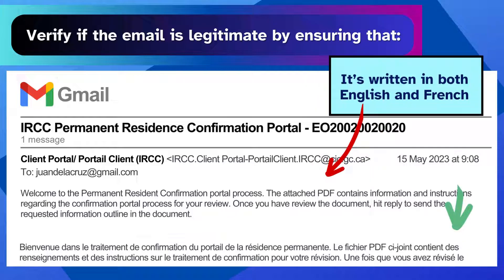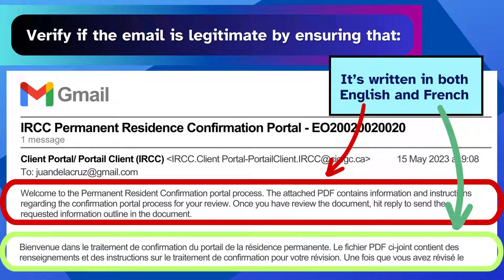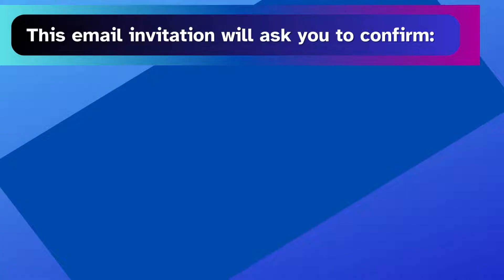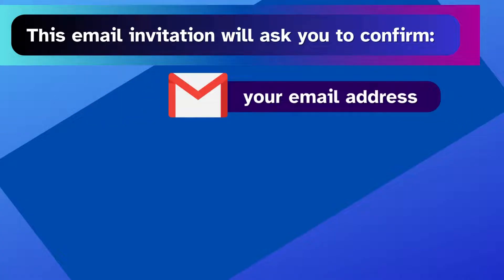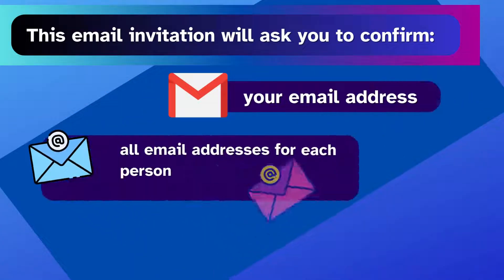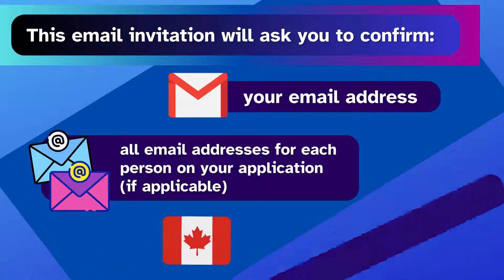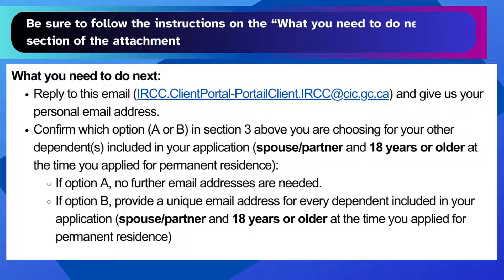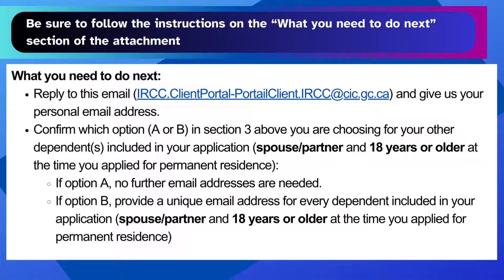The email is written in both English and French, and the subject line is 'IRCC Permanent Residence Portal.' This email will ask you to confirm your email address, all email addresses for each person on your application, and that you are physically in Canada. Be sure to follow the instructions in the 'What You Need to Do Next' section of the attachment sent to you.